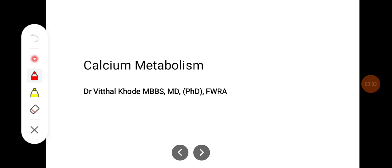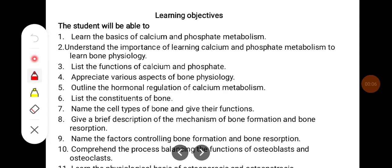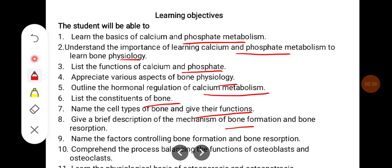Hello everyone. In this class we'll try to learn about calcium metabolism. The learning objectives of this class would be to learn the basics of calcium and phosphate metabolism, understand the importance of learning calcium and phosphate metabolism, learn bone physiology, list the functions of calcium and phosphate, appreciate various aspects of bone physiology, outline hormonal regulation of calcium metabolism, list the constituents of the bone, name the cell types of bone and give their function, give a brief description of bone, the mechanism of bone formation and bone resorption, name the factors controlling bone formation and bone resorption, comprehend the process of balancing osteoblasts and osteoclasts, and learn the physiological basis for osteoporosis and osteopetrosis.